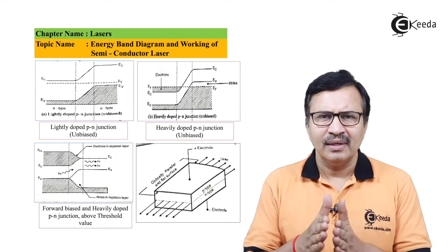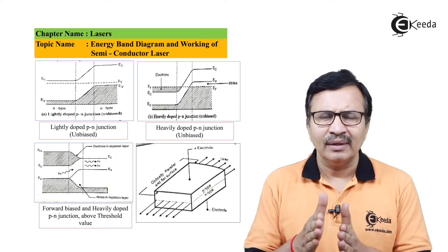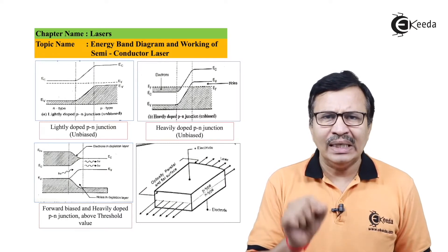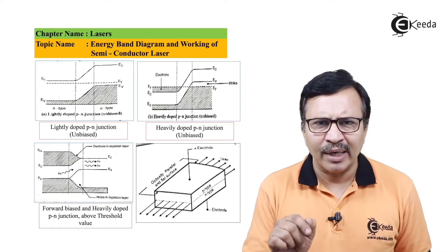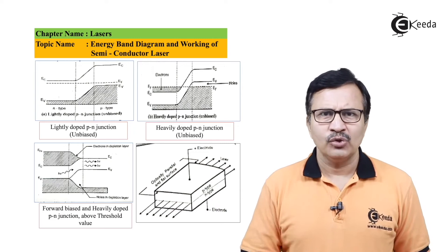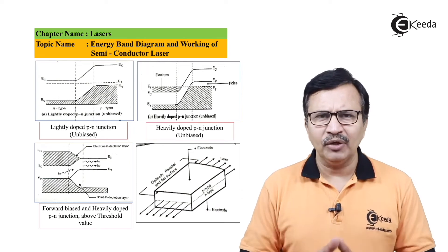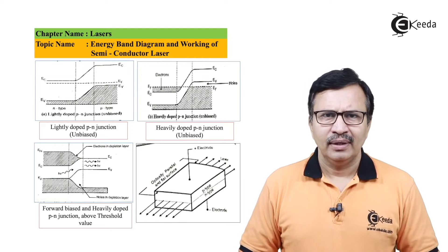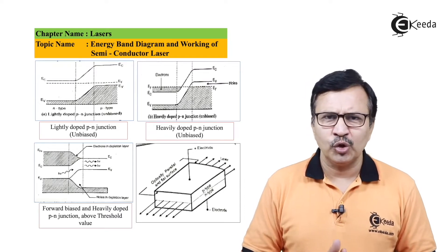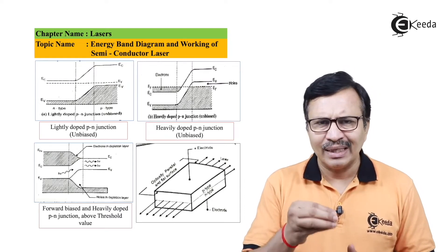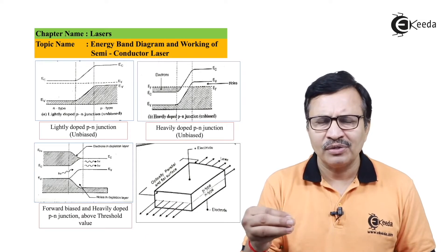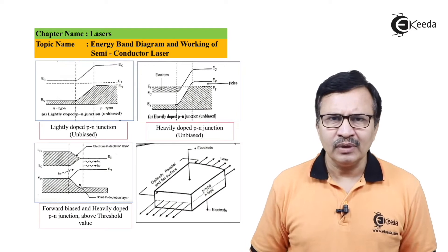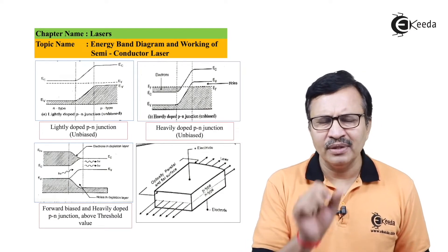The length of this cavity is of the order of an integral multiple of lambda by 2. One end of the cavity is fully polished and the other end is partially polished, so that the laser can come out from the partially polished end, which is nothing but the depletion region.